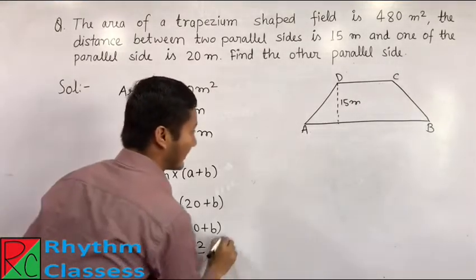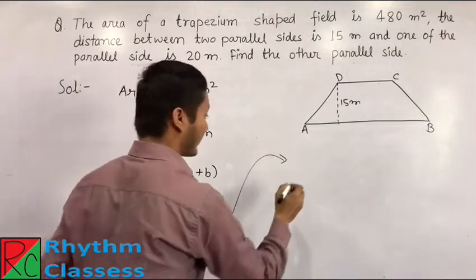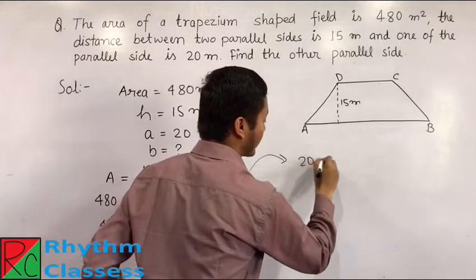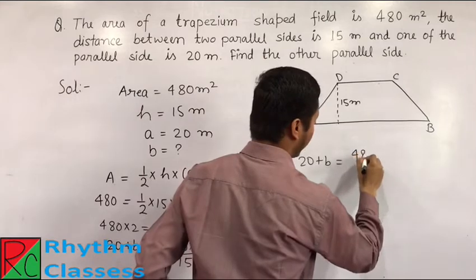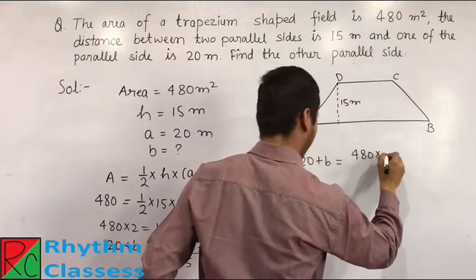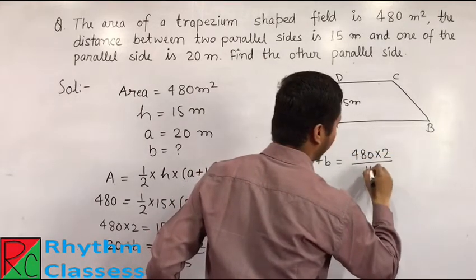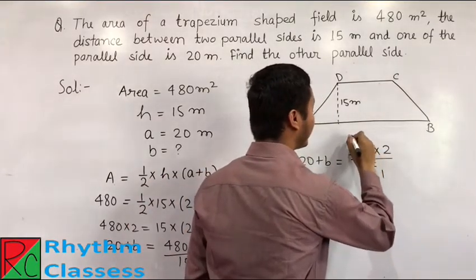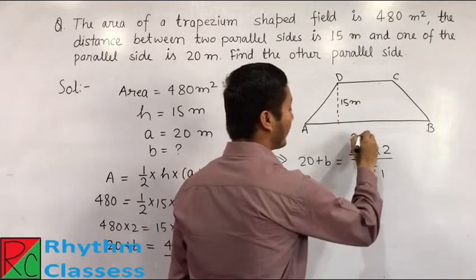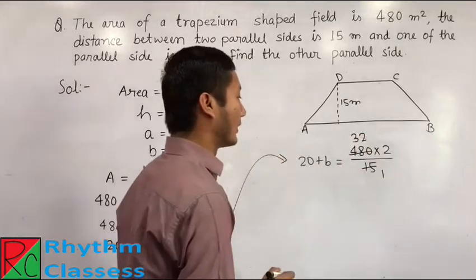Now, let us write here. It will be like 20 plus B equals to 480 into 2 by 15. From here, we can say 15 once a 15 and 15, 3 is 45, 15, 2 is 30.